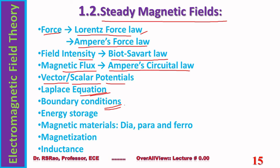In steady magnetic fields, both vector potentials and scalar potentials exist, each with its own applications. Then Laplace's equation, boundary conditions — which connect fields across interfaces between different media — and energy storage are studied. Magnetic fields, like electric fields, are reservoirs of energy. The origin of energy in the magnetic field and the relation between field intensity and energy stored are explored. Then magnetic materials — mainly three types — and magnetization, which is somewhat similar to polarization. Inductance, one of the three basic electrical quantities, is analogous to capacitance in electric fields, and is introduced and explained in terms of field quantities.